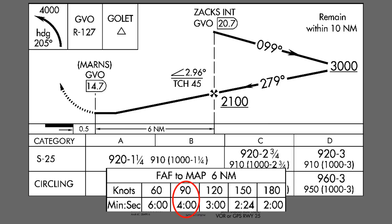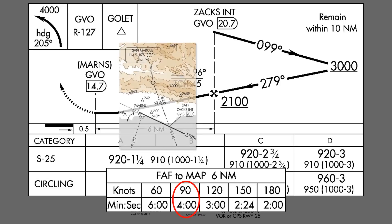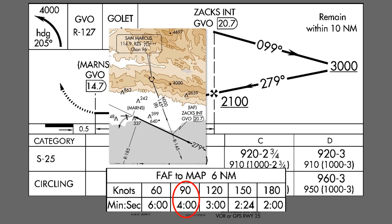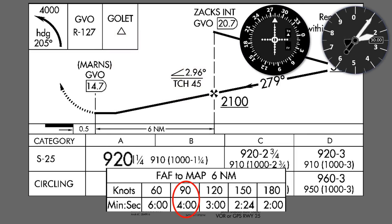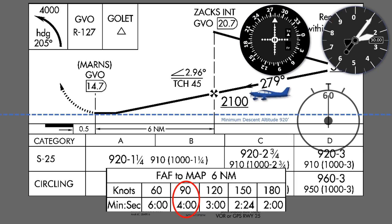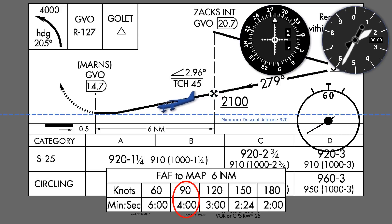How can we identify the FAF without DME? The ZAX intersection is on the 145 radial from another VOR at San Marcos while we're on the approach course, so if we have dual VORs, we can identify it. No such cross radial would exist for the missed approach point though. The MDA for this approach is 920, so we can add 50 feet to that for a buffer just as before. Crossing ZAX, we'll start our timer, level off above the MDA, and if we don't see the runway, go missed at 4 minutes.